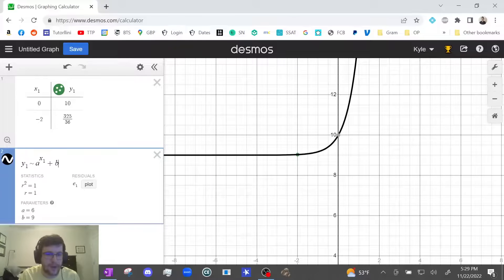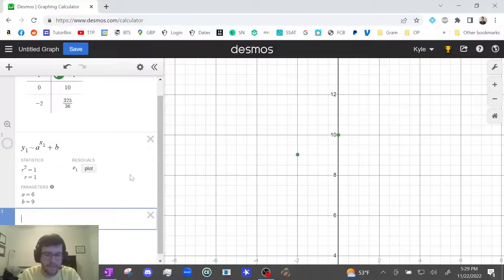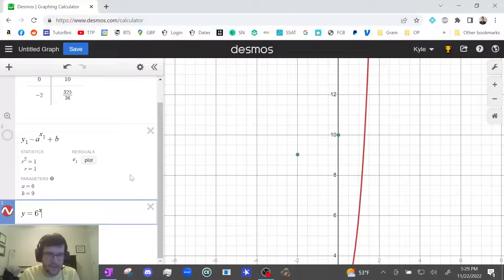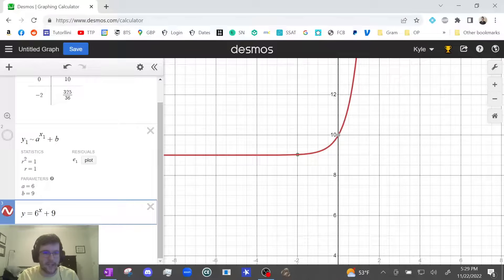And let's just make sure it's right. Y equals, I think A is 6. So that would be 6 to the x plus 9. Beautiful. So we could now use that to answer a follow-up question. But get this. It already tells us A equals 6 and B equals 9.